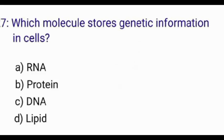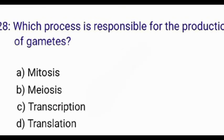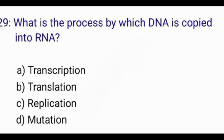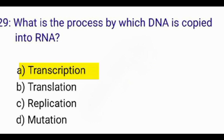Which molecule stores genetic information in cells? The correct answer is option C: DNA. Which process is responsible for the production of gametes? The correct answer is option B: meiosis. What is the process by which DNA is copied into RNA? The correct answer is option A: transcription.